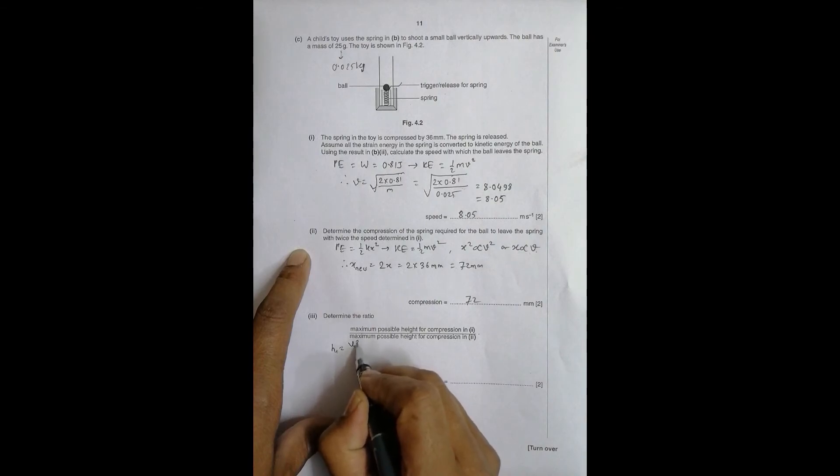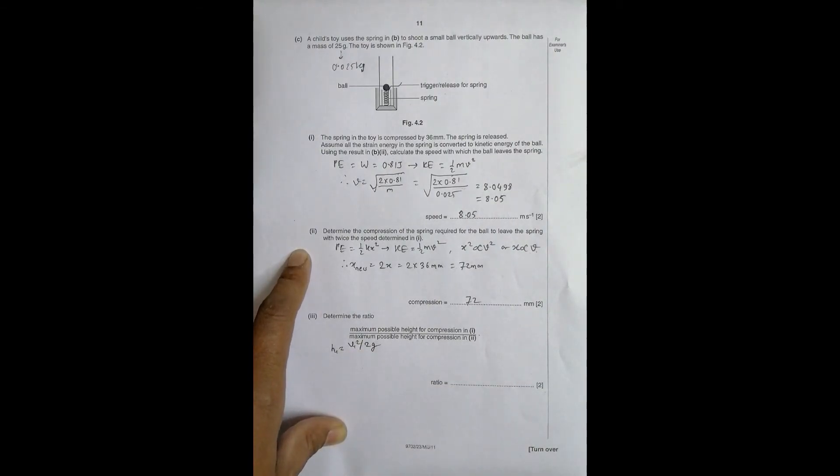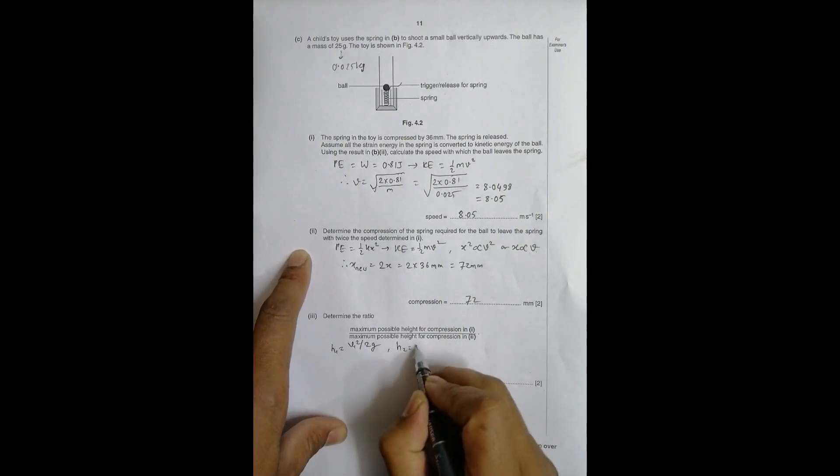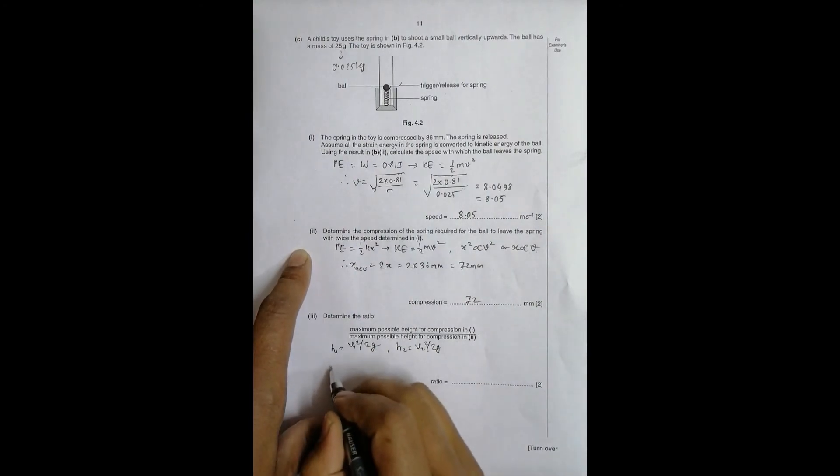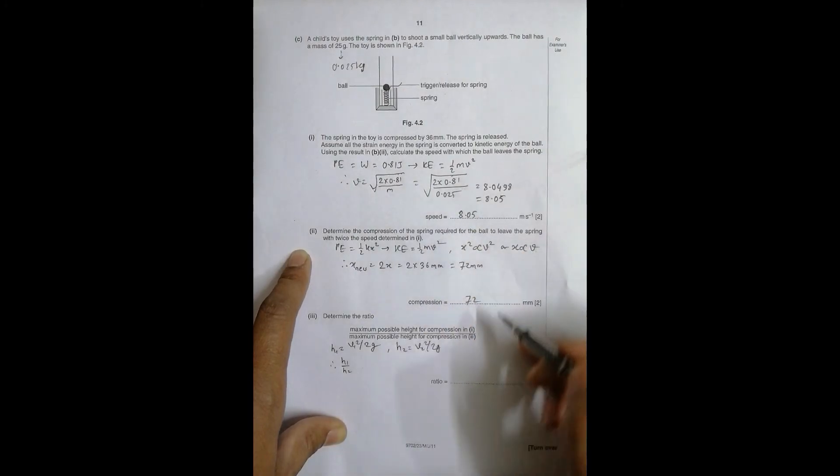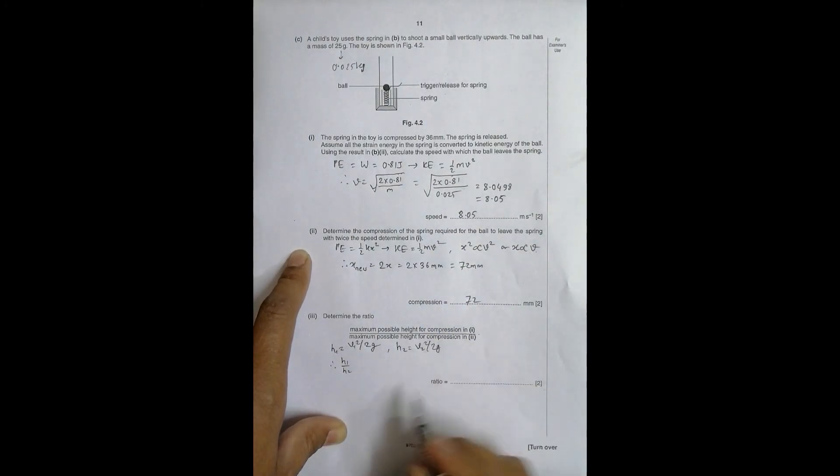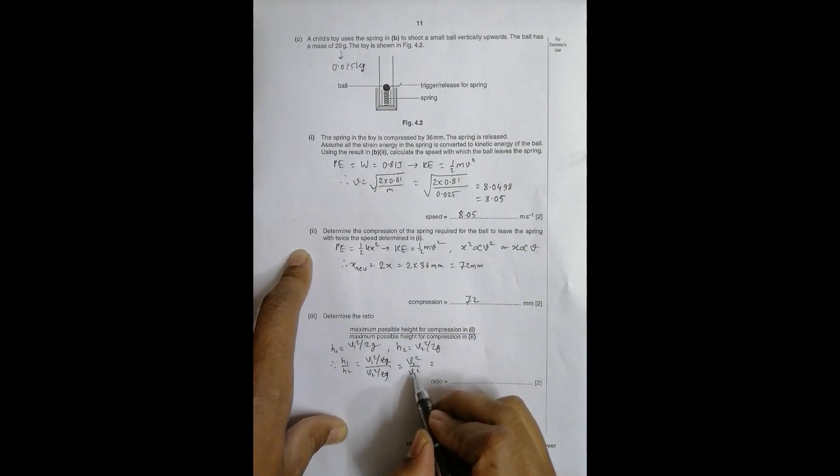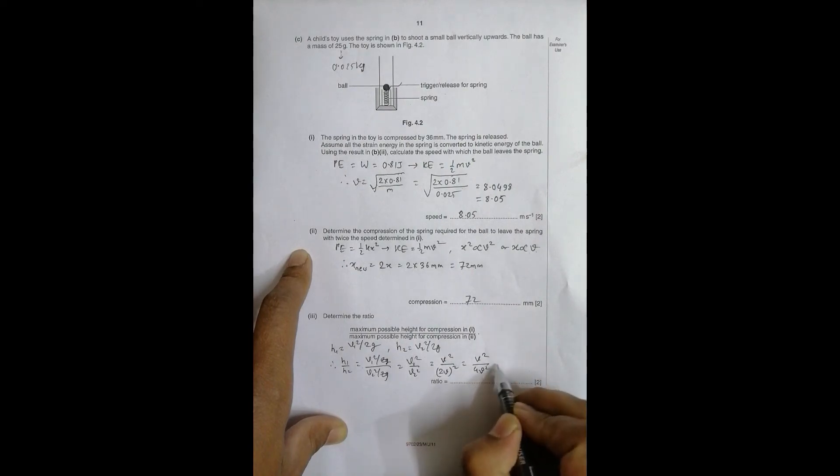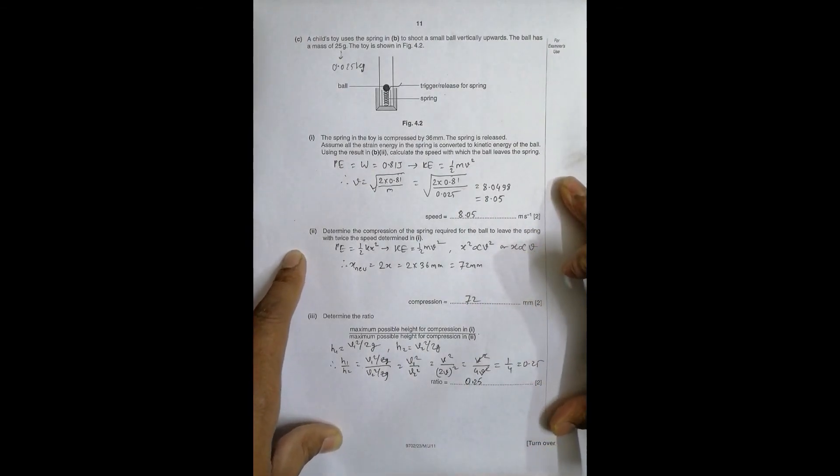Similarly, this height two is equal to v2^2 by 2g. g same for both. Therefore h1 by h2 equals v1^2 by 2g divided by v2^2 by 2g. 2g cancels, so v1^2 by v2^2. Now v2 is twice v1, so this is v^2 by (2v)^2, that's equal to v^2 by 4v^2, equal to simply 1 by 4 or 0.25. So the ratio is 0.25 or simply 1 by 4. That gives the complete answer for this problem.